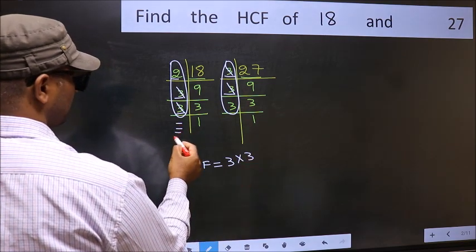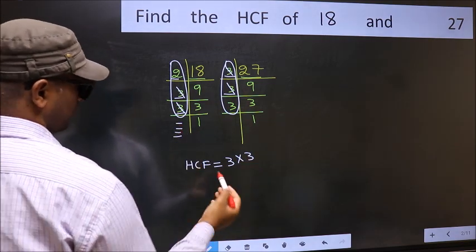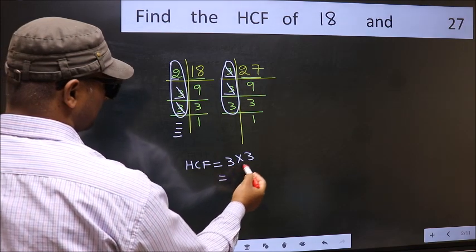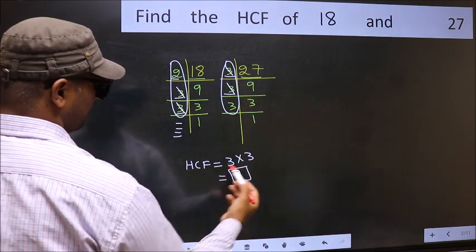No more numbers have been left out. So, our HCF is 3 times 3. 9 is our HCF. Thank you.